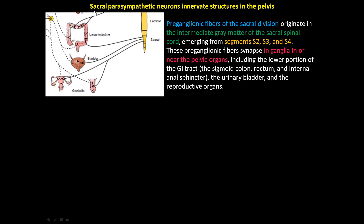The sacral part of the parasympathetic nervous system lies in segments S2, S3, and S4. These neurons originate from the intermediate gray matter of the sacral spinal cord, and the preganglionic fibers synapse in ganglia in or near the pelvic organs. They innervate the lower GI tract — the sigmoid colon, rectum, and internal anal sphincter — as well as the urinary bladder and reproductive organs. You do not have voluntary control over your internal anal sphincter, but you do over the external anal sphincter. That concludes the parasympathetic division of the autonomic nervous system.